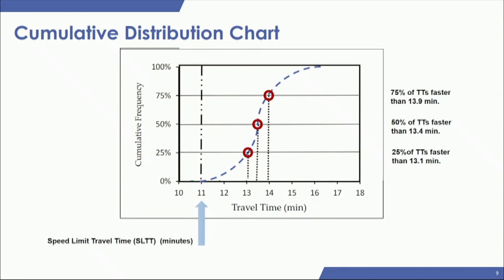To interpret the chart, you look at where the actual curve crosses the percentiles. At the 25th percentile, for example, you can see where it crosses the curve — in this case at 13.1 minutes — meaning 25 percent of the travel times are faster than that value. You can do this for any percentile within the diagram.